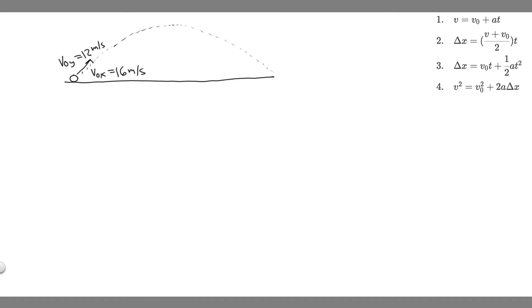I think the easiest way to solve this is by approaching each part individually. So let's start with A — we're trying to find at what speed the ball hits the ground. If something lands at the same elevation as where it begins, the initial velocity and the final velocity are going to be exactly the same. We just know the components, so we need to find the initial velocity, which will equal the final velocity.